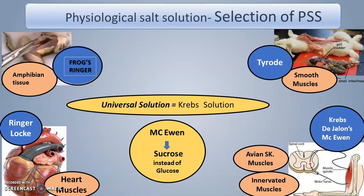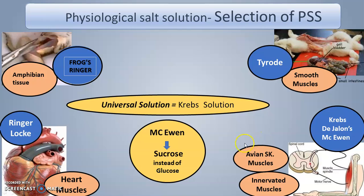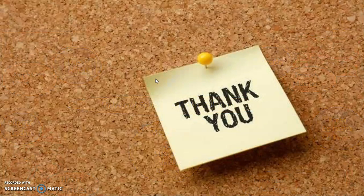Selection of PSS solution depends on the type of tissue being used. Krebs solution is the universal solution. For amphibian tissue, use Ringer's solution. For smooth muscle tissue, use Tyrode solution. For innervated muscles or avian skeletal muscle, use Krebs or Dejong's McEwen solution. For heart muscle, use Ringer-Locke solution. According to the type of tissue, the appropriate PSS solution is selected. Thank you. Now we will proceed to the actual procedure of PSS solution preparation.